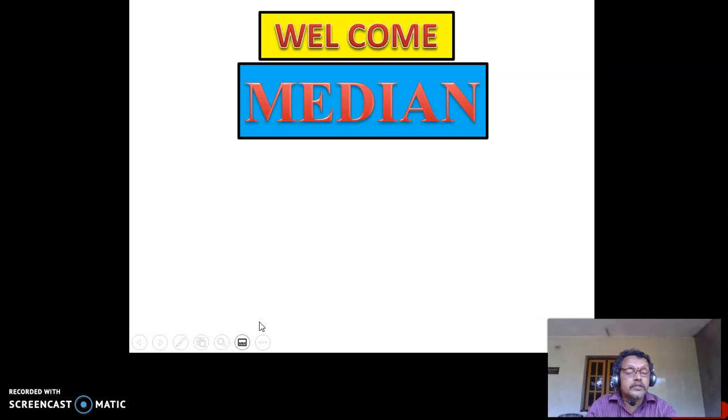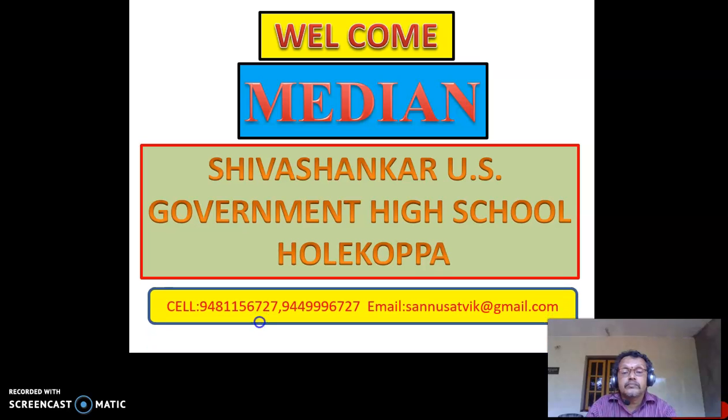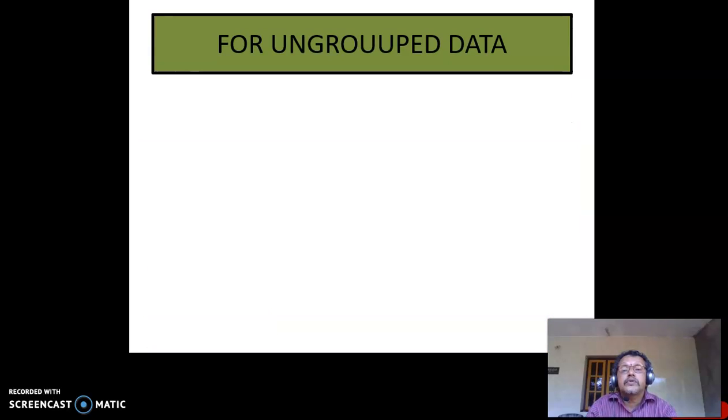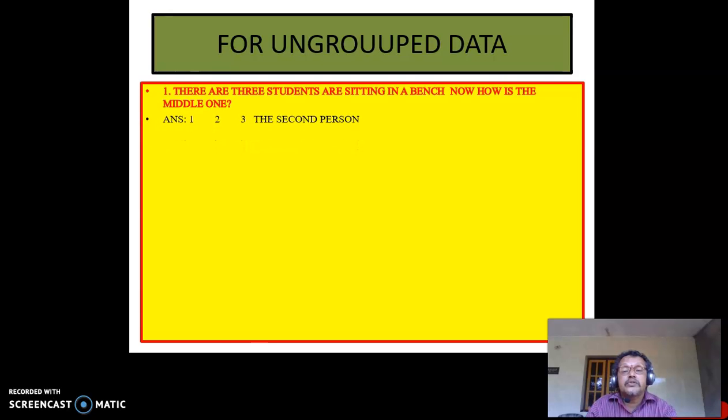Welcome dear students. In this class we shall study about the median. So for ungrouped data, if there are three students sitting in a bench, who is the middle one? The second person is the middle one - the middle score.